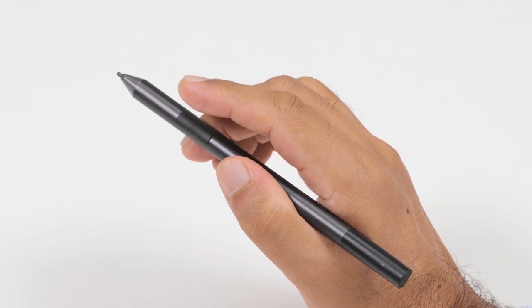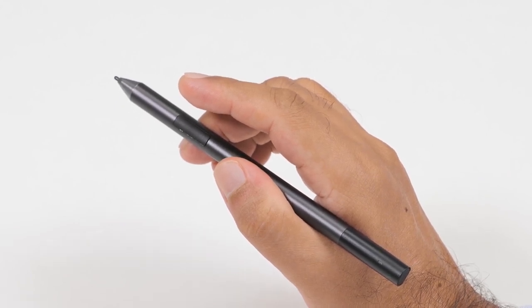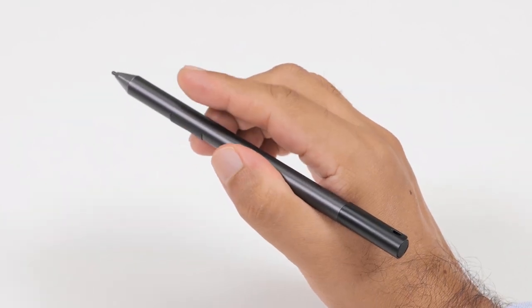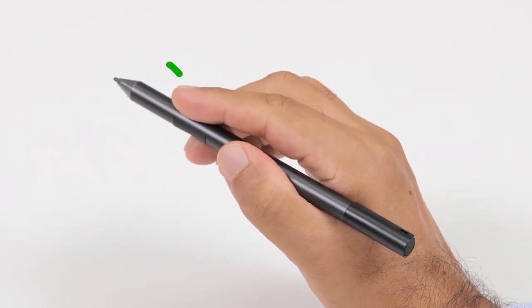To use the Dell Active Pen, hold it like you would a regular pen or pencil. However, hold the pen in a way as not to accidentally press the barrel button while working.